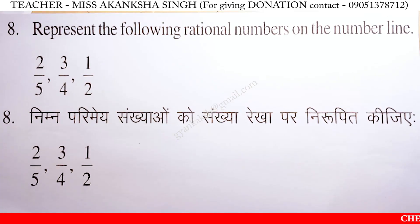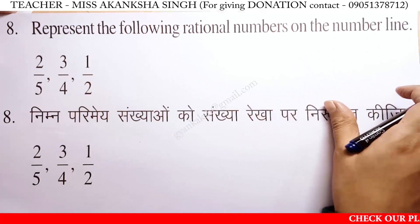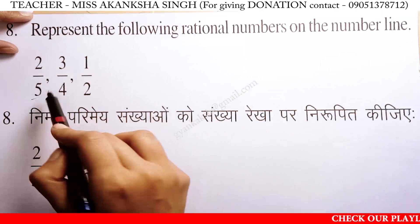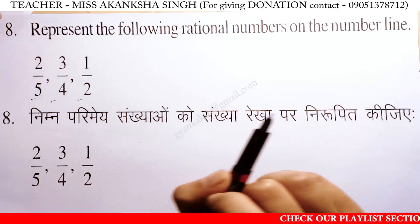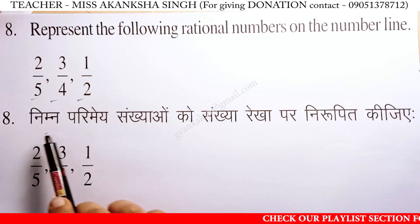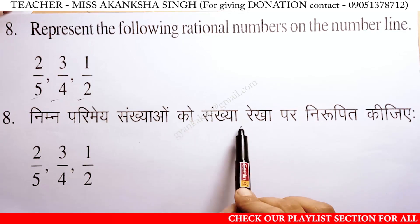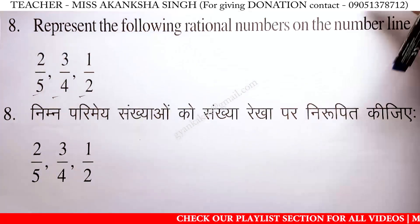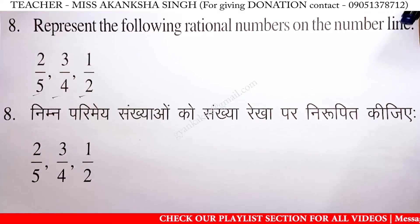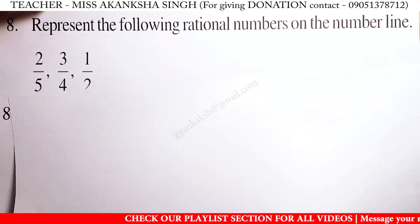Next question: represent the following rational numbers on the number line. This is a rational number — how do we represent it on the number line? First, 2 by 5 — represent it on the number line.